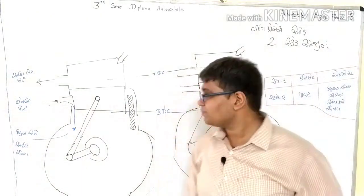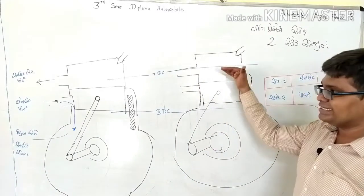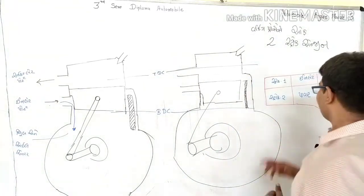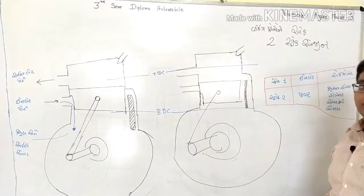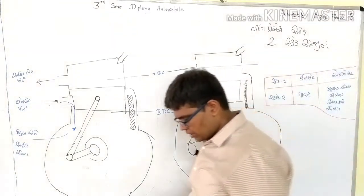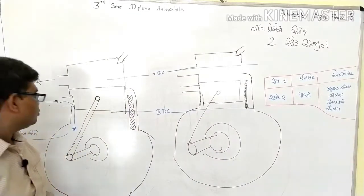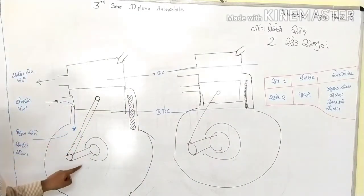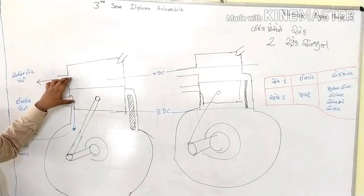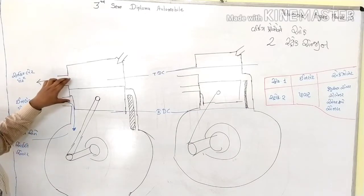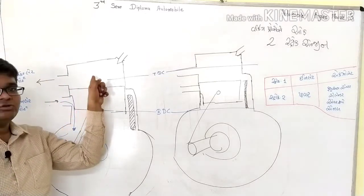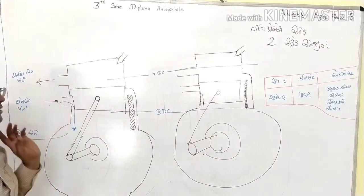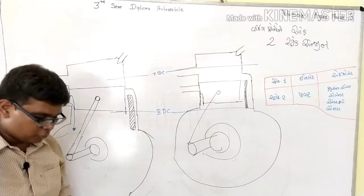The second stroke is the power stroke. The piston moves from TDC down to BDC. The fuel ignites above the piston during this stroke. When the piston moves above and below, the exhaust gases are expelled in the same motion.